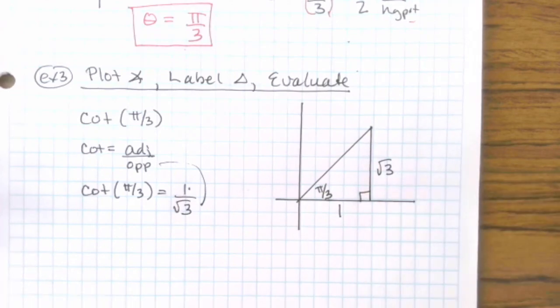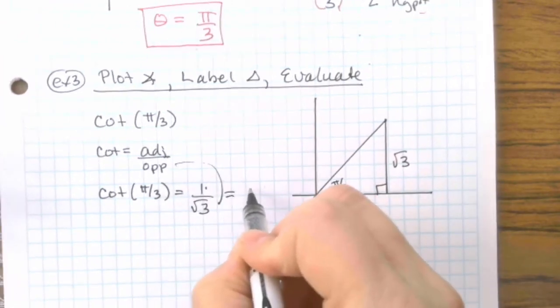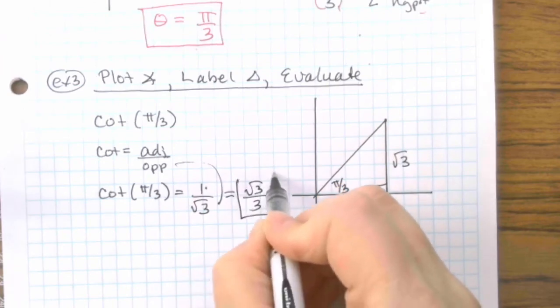So we're supposed to plot the angle, label the triangle, and evaluate. So far we've done the evaluation: 1 over radical 3, but you need to rationalize it. Radical 3 over 3. What we're missing is the last side of the triangle.